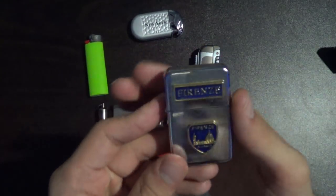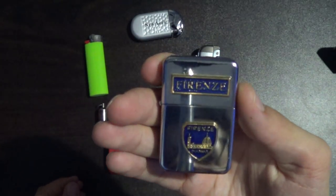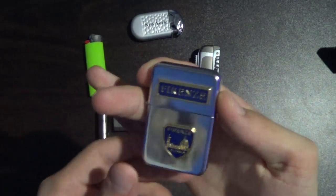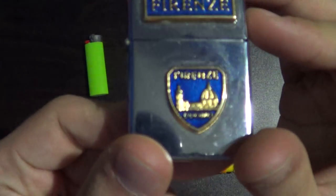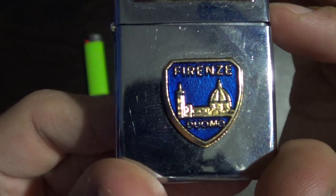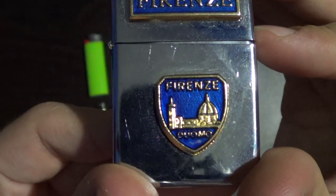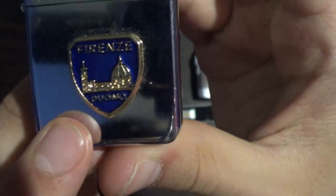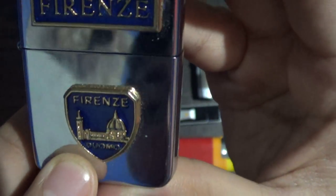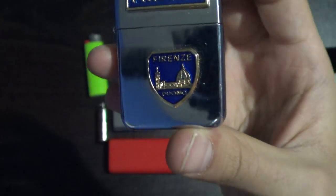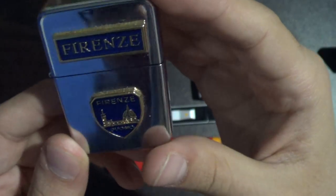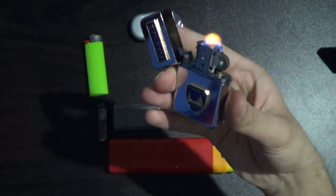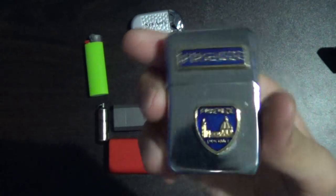Next up, we have a lighter that was given to me by someone who went to Italy, and it says Firenze on it. There we go. It has a nice little badge there. This says Duomo, which is from Il Duomo in Italy. It's a big church building or something like that, and it works just like the Zippo. So yeah, it's a pretty cool lighter.